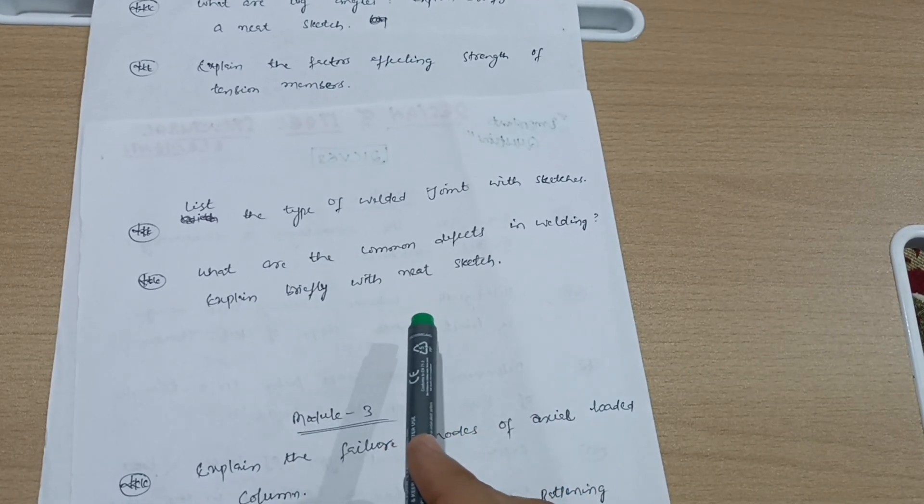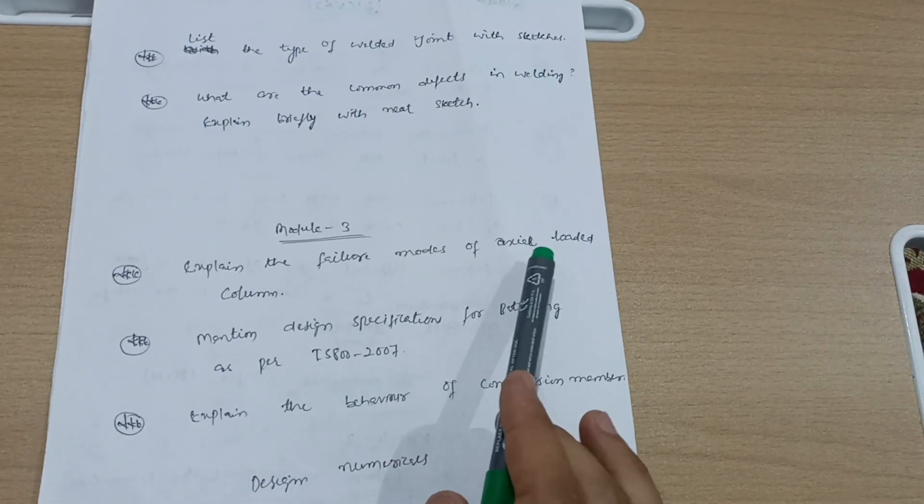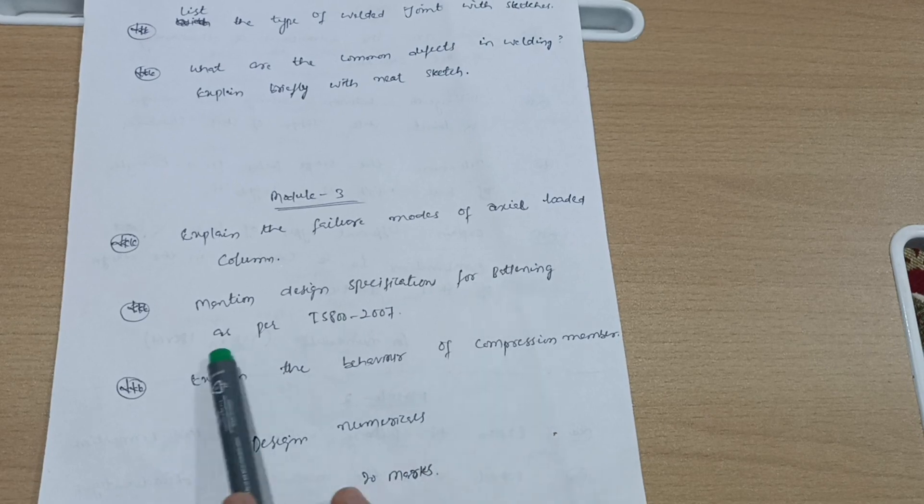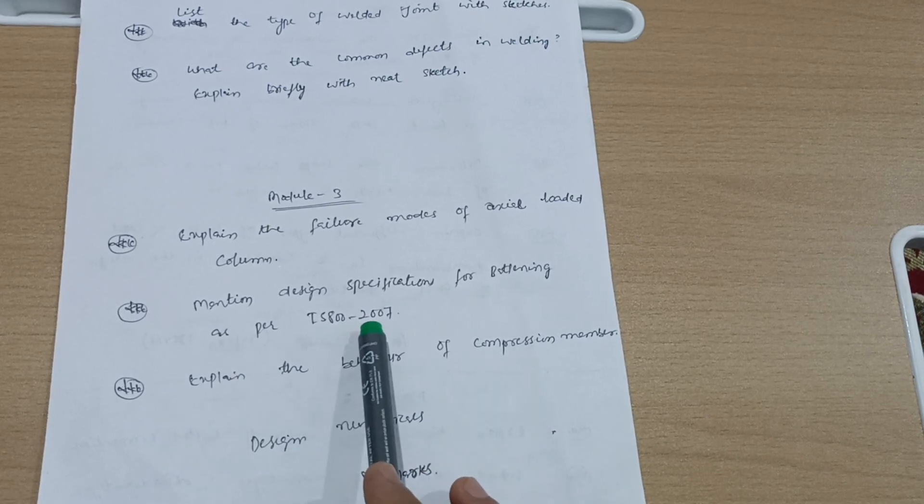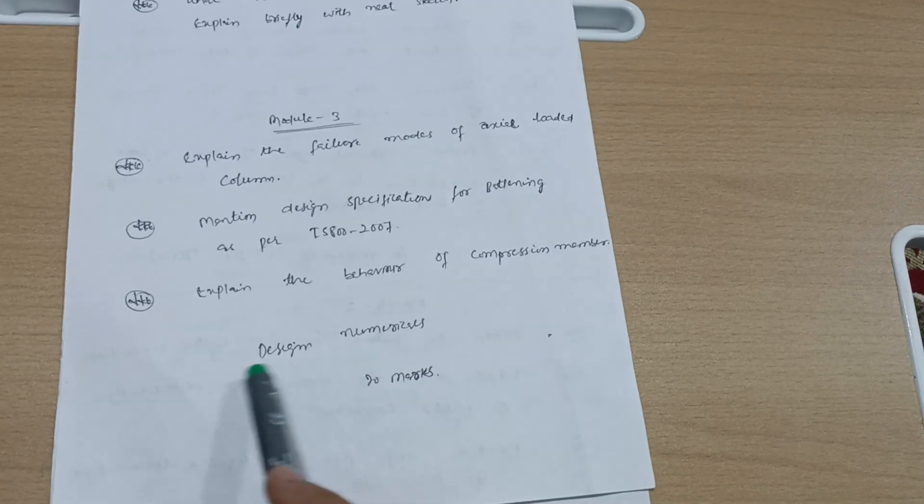As far as numericals are concerned, same paper you have to refer, 18 Civil 61. As I earlier mentioned, the numerical part is much more in the subject, so your main focus should be on numericals. Next is Module 3: Explain the failure modes of axially loaded column. Mention design specifications for battening as per IS 800 2007. Explain the behavior of compression members.